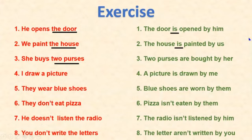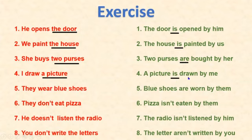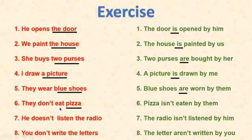Number three: 'Two purses are bought by her' because the subject is 'she.' Number four: 'I draw a picture' → 'A picture is drawn by me.' 'Drawn' is the past participle of 'draw.' Number five: 'They wear blue shoes' → 'Blue shoes are worn by them.' We start with 'blue shoes' as the object, use 'are' because it's plural, and 'worn' is the past participle.